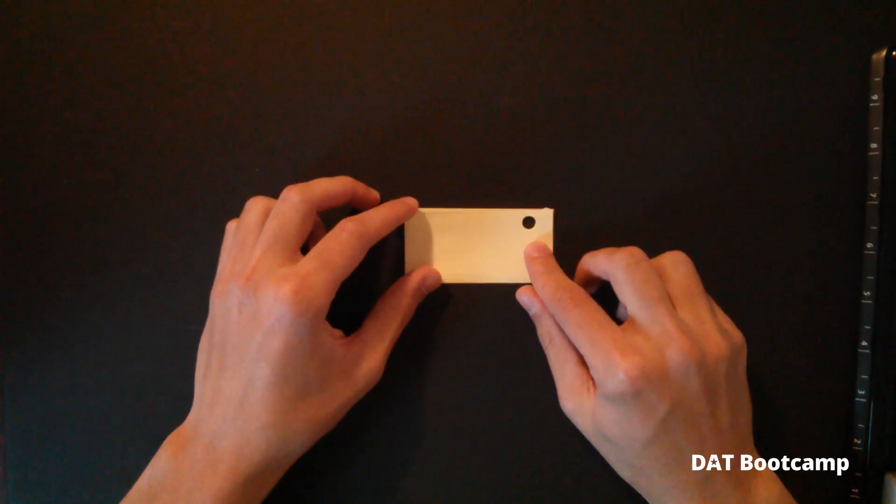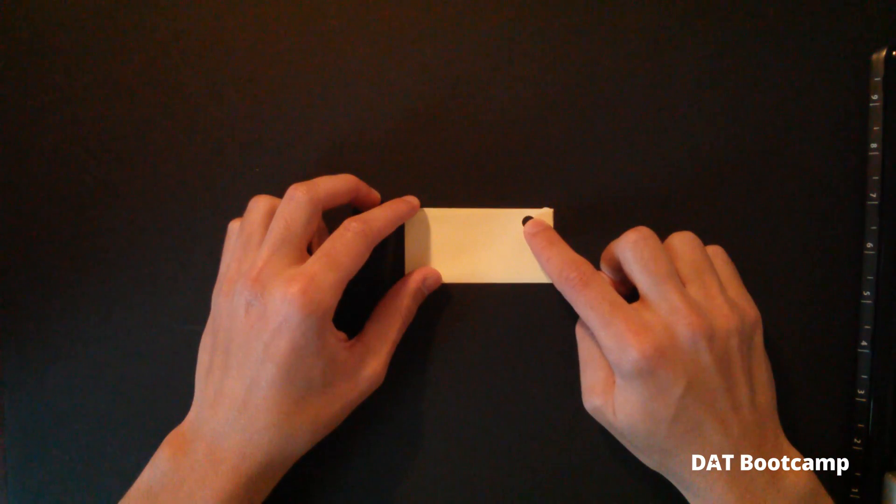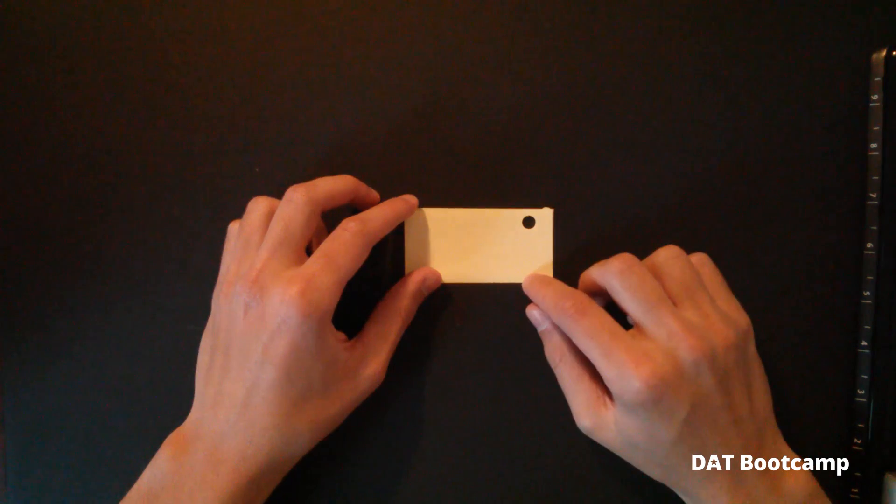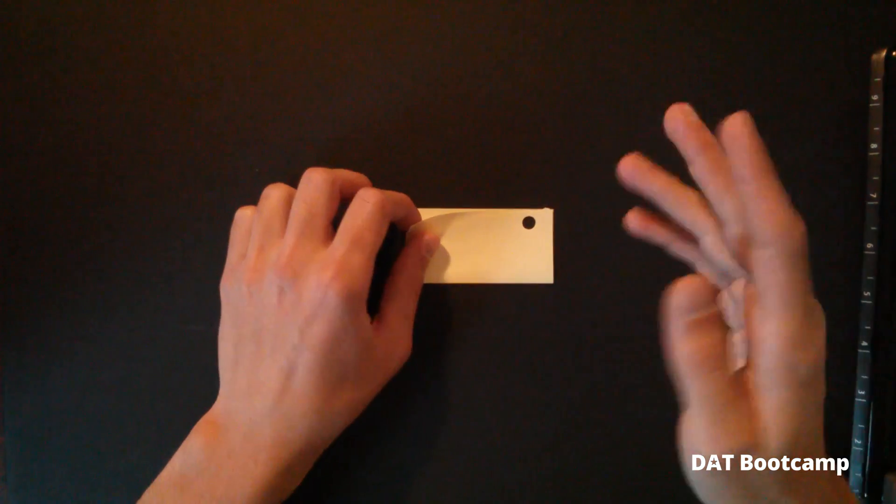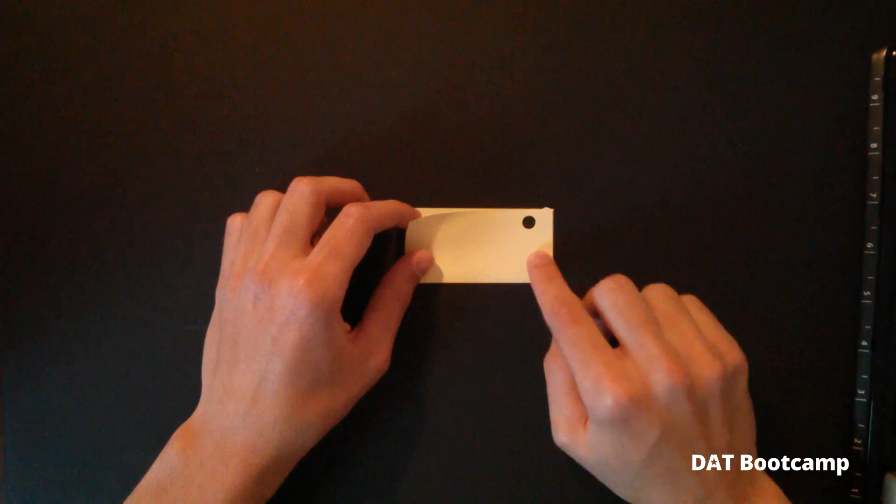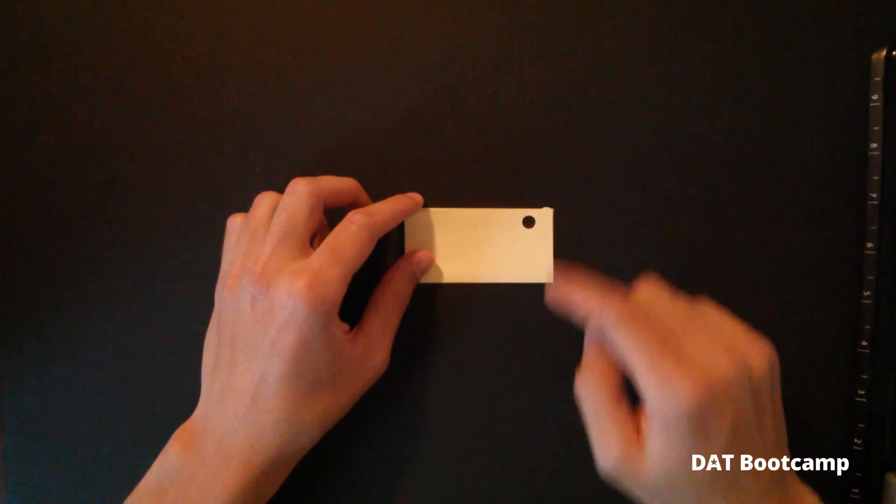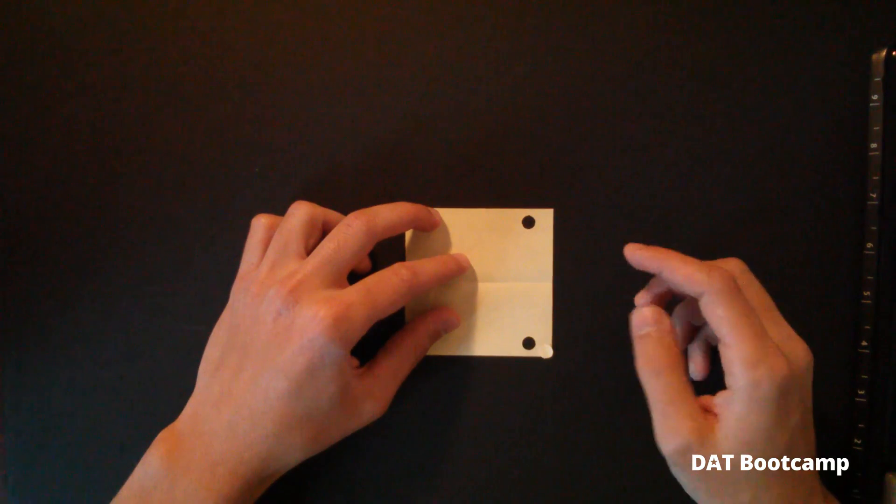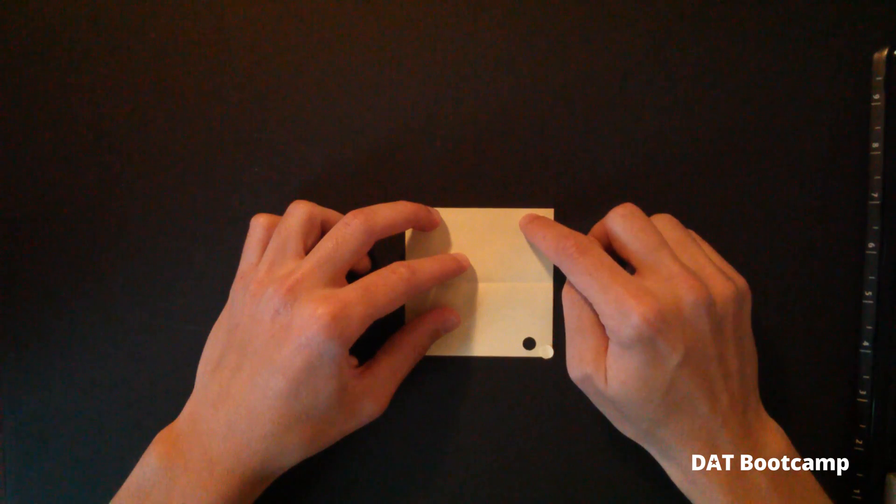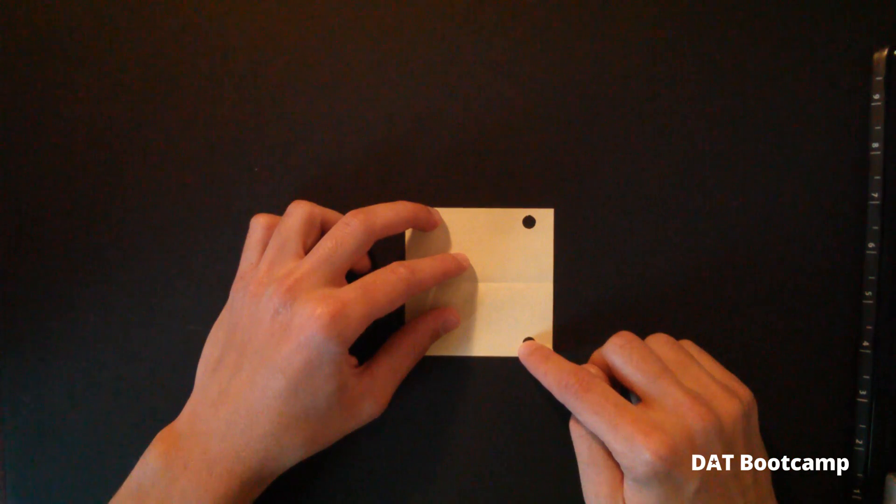And then your job is to mentally unfold this paper and see what it matches up to. So for example, for this problem, it's very simple. We would have this problem. We'd have one fold, a hole punch, and the answer choice would involve a hole in the top right and the bottom right.